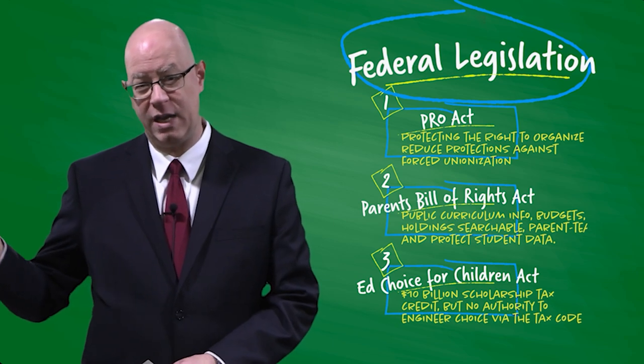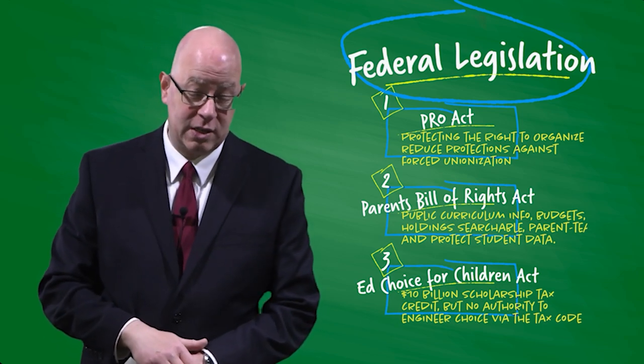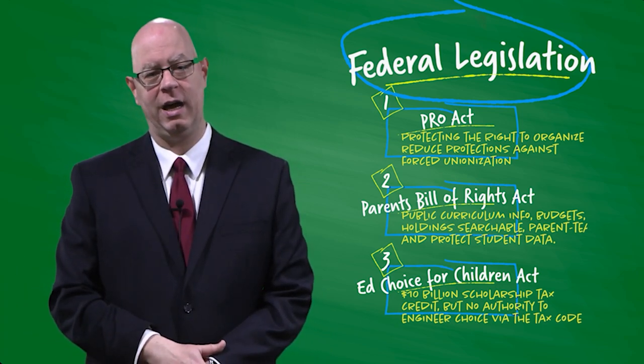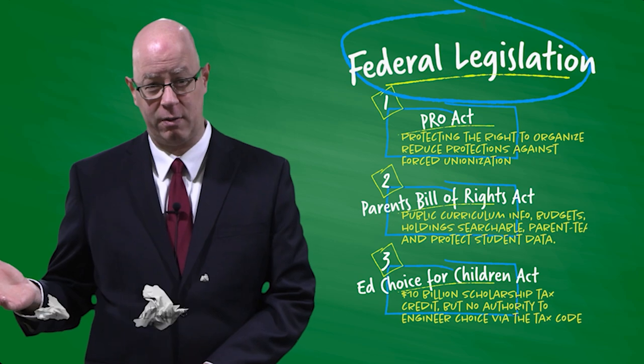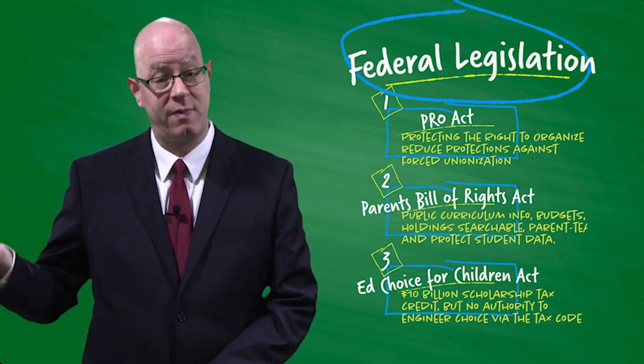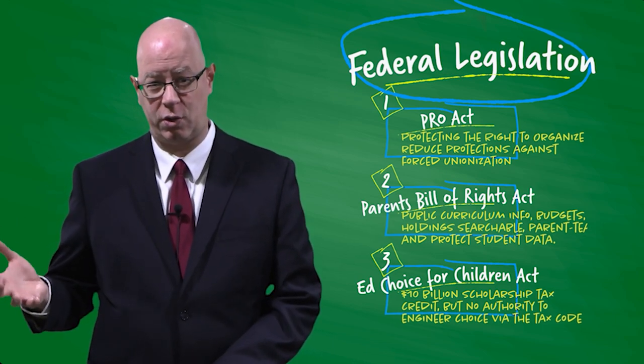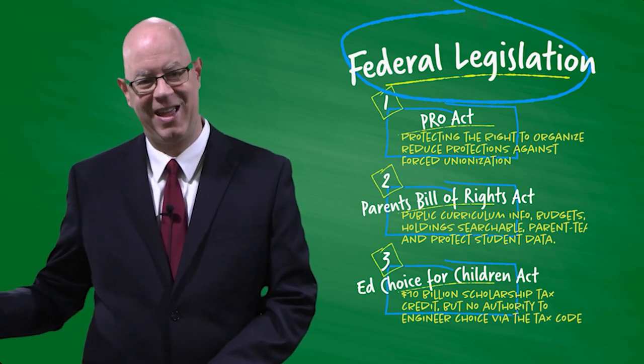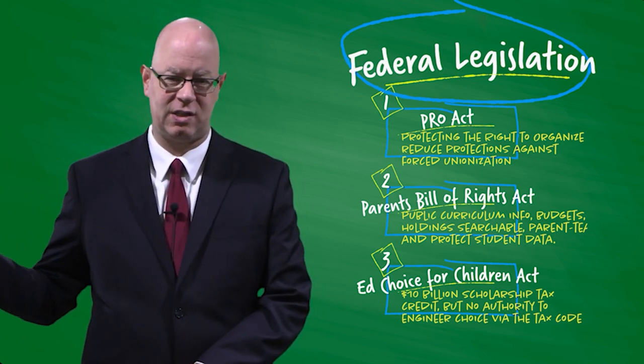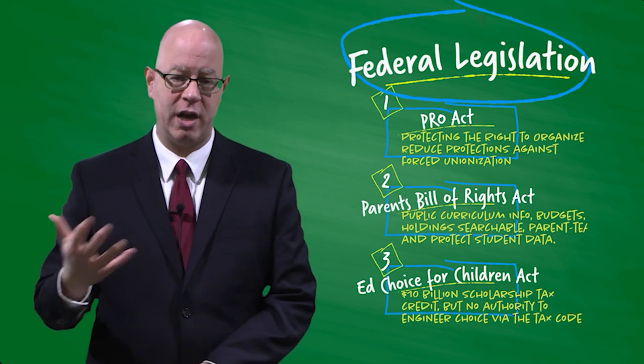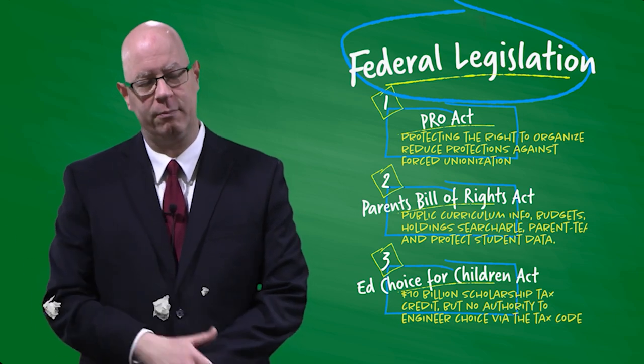The other major piece of education legislation that we're seeing in Washington is the Educational Choice for Children's Act. This is sponsored by Senator Tim Scott of South Carolina. It would create a $10 billion scholarship tax credit at the federal level. It's certainly well intended. What we should want is school choice. We want power to be put in the hands of parents and families and taken away from school districts and state legislators. We want it to be something that people control, that families control. And so it's well intended.